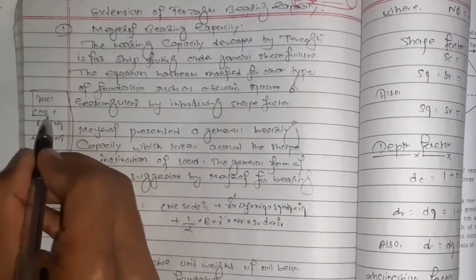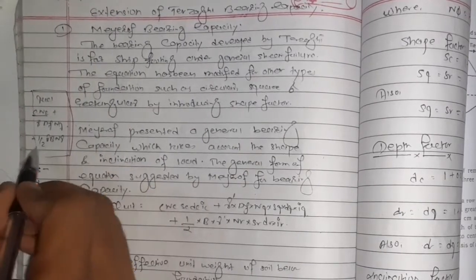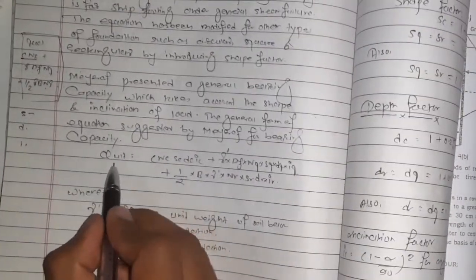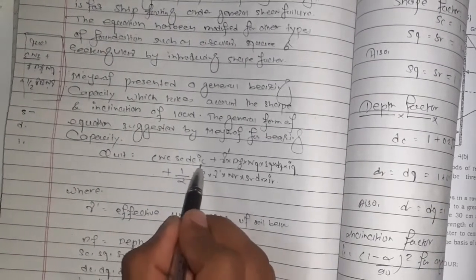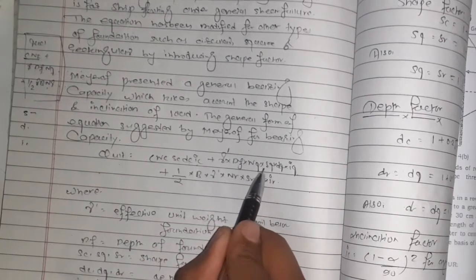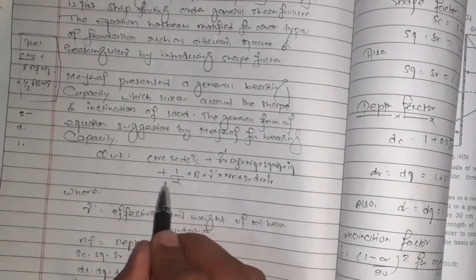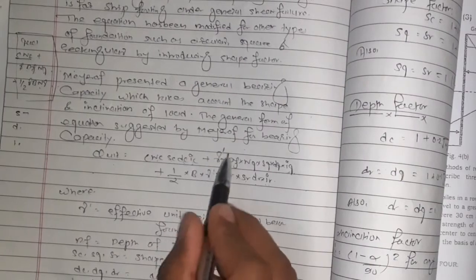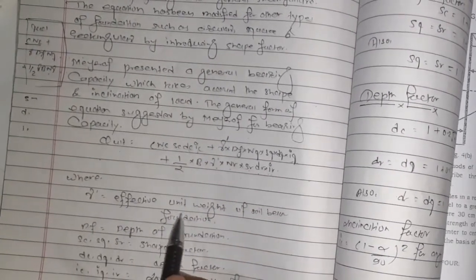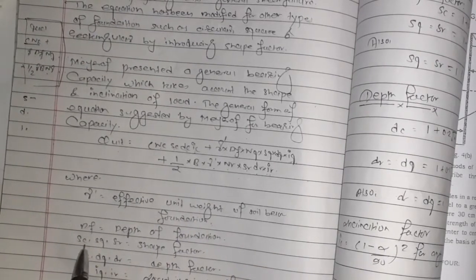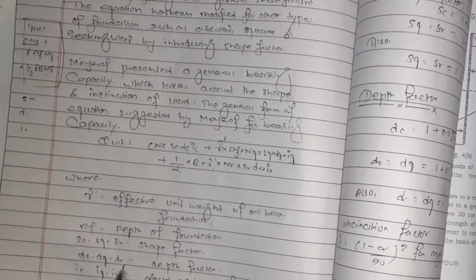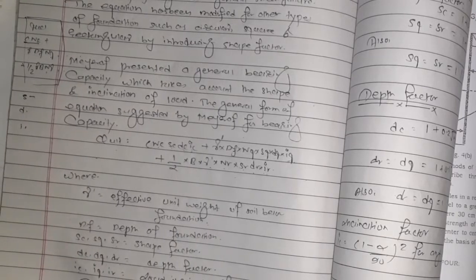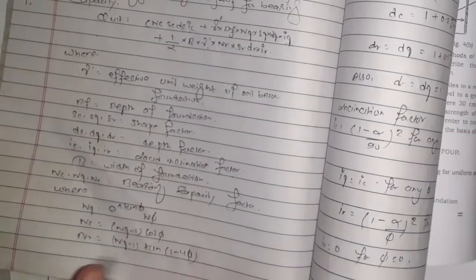For Meyerhof, q ultimate = c·Nc·sc·dc·ic + γ'·df·Nq·sq·dq·iq + 1/2·B·γ'·Nγ·sγ·dγ·iγ. Where γ' is the effective unit weight of soil below the foundation, df is depth of foundation, sc, sq, sγ are shape factors, dc, dq, dγ are depth factors, ic, iq, iγ are load inclination factors, B is width of foundation, and Nc, Nq, Nγ are bearing capacity factors.